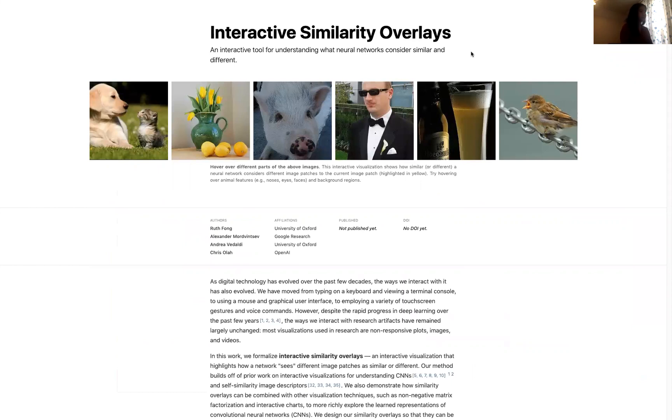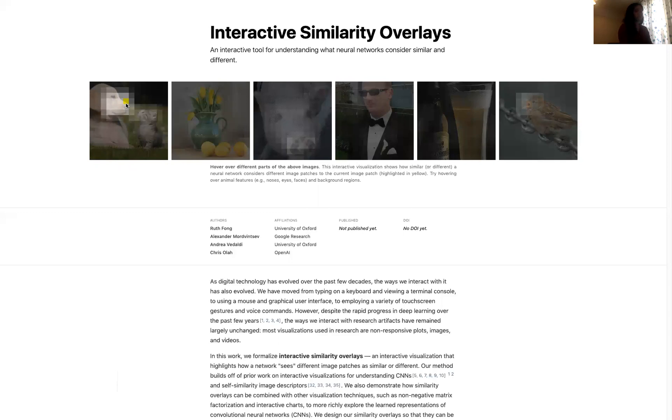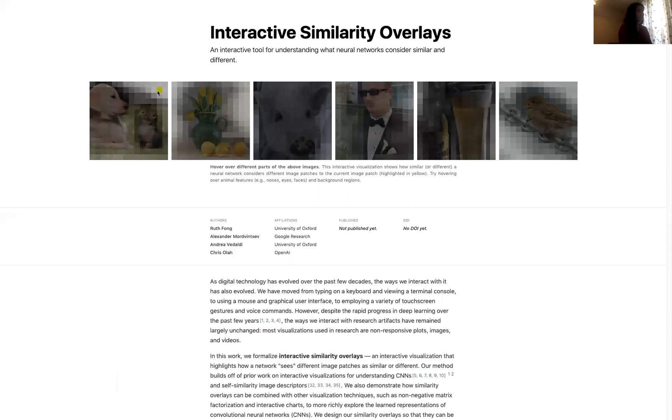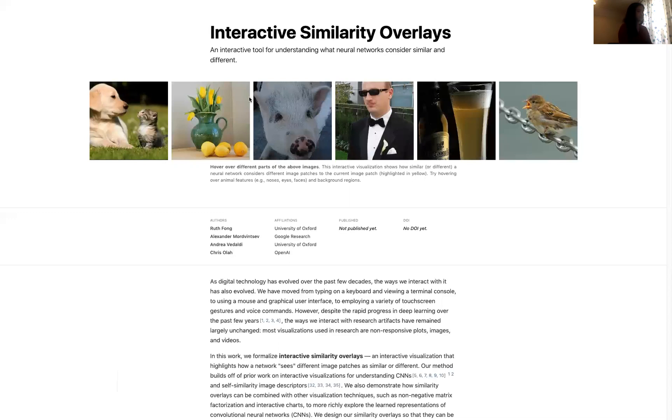Here is our simple tool known as the interactive similarity overlays. As we hover over different image patches highlighted in yellow, we see how similar or different other image patches are. We can notice a few interesting things. First, we highlight the background. We notice that the background in other images also is highlighted, despite them being different colors. To briefly explain some other interesting applications, we can use this similarity overlays technique to compare the representation across different layers.